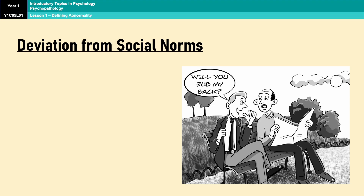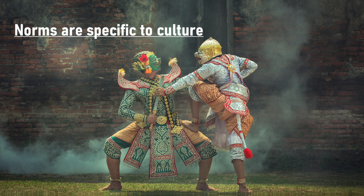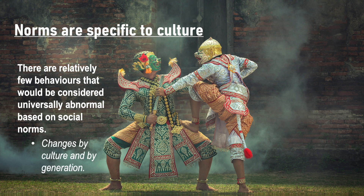Our second definition of abnormality is deviation from social norms. Social norms are unwritten rules, expectations, and standards set by a society and culture that determine what is considered acceptable behaviour. Deviation from social norms, as a definition, considers behaviour abnormal if it significantly violates these social norms. It's really important to understand that social norms are specific to culture and time period, and therefore are not static over time or by location — behaviours considered normal in one place or time may not be considered normal somewhere else.